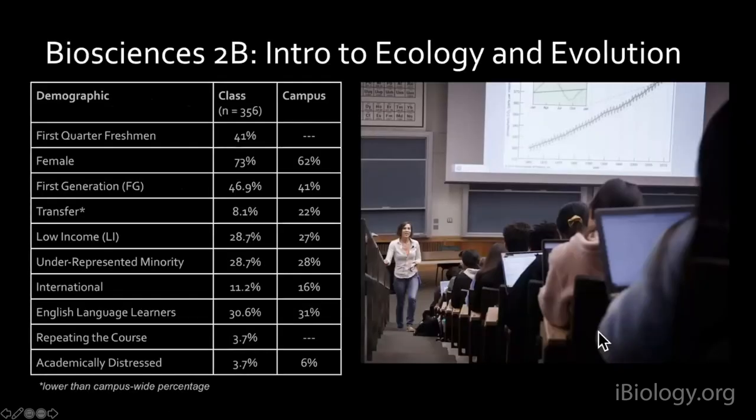To introduce what Brittany and I were working on, I want to talk about the class we studied. We did this project before the pandemic — it was an in-person class. Part of why we chose it is that it's rather large; this section was about 350, ranging from 300 to over 500. That means you can get a lot of data from students.